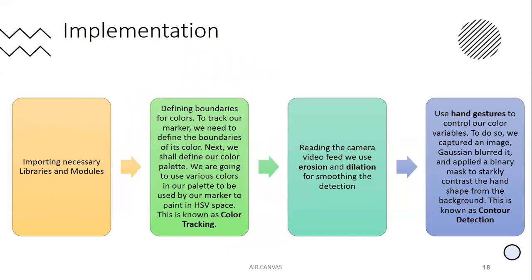For implementation, first we import all the necessary libraries and modules — NumPy, Collections, and OpenCV. After importing, we define boundaries for colors; to track our marker, we need to define the boundaries of its color. Next, we define our color palette, using various colors to be used by our marker to paint in HSV color space. This is known as color tracking.